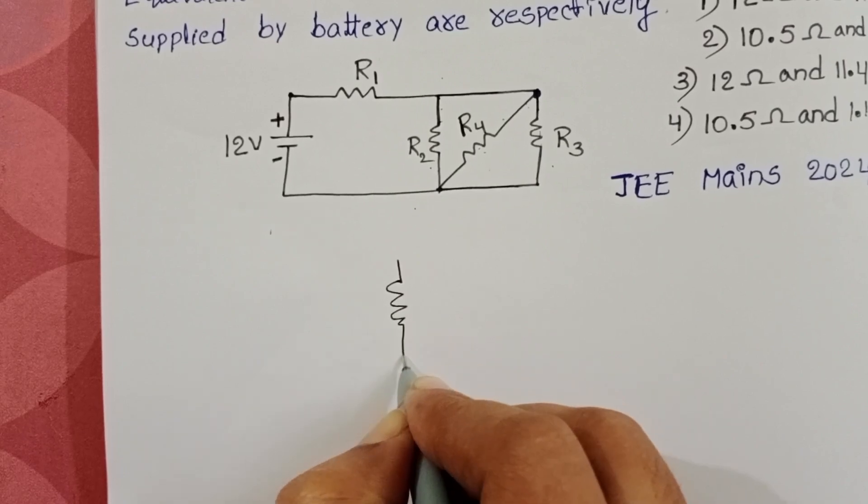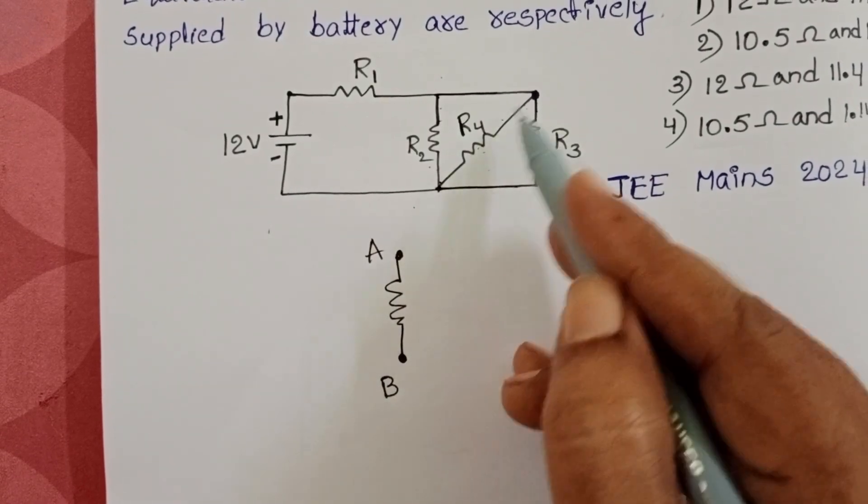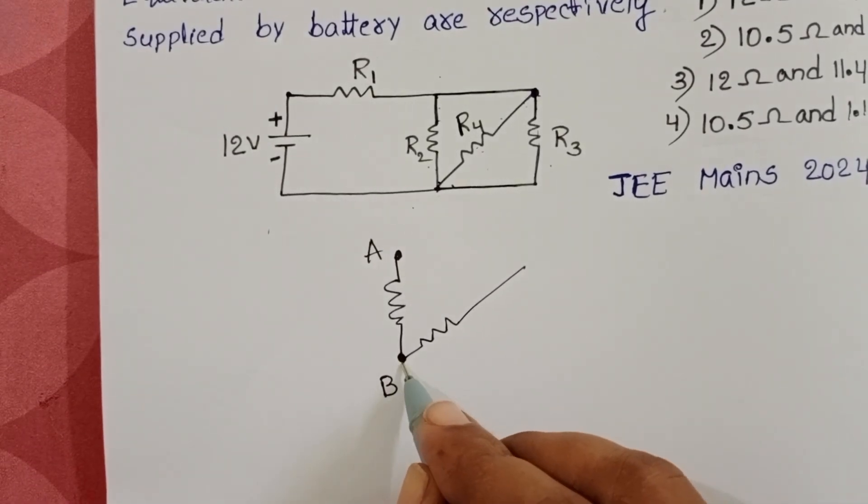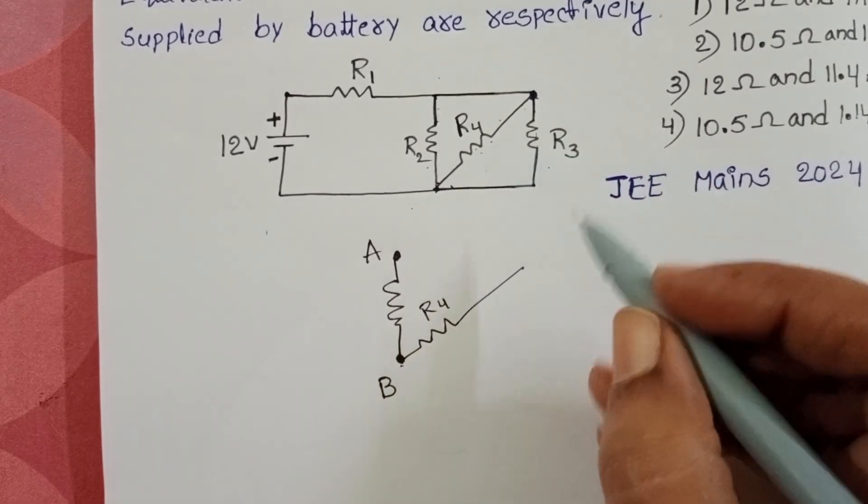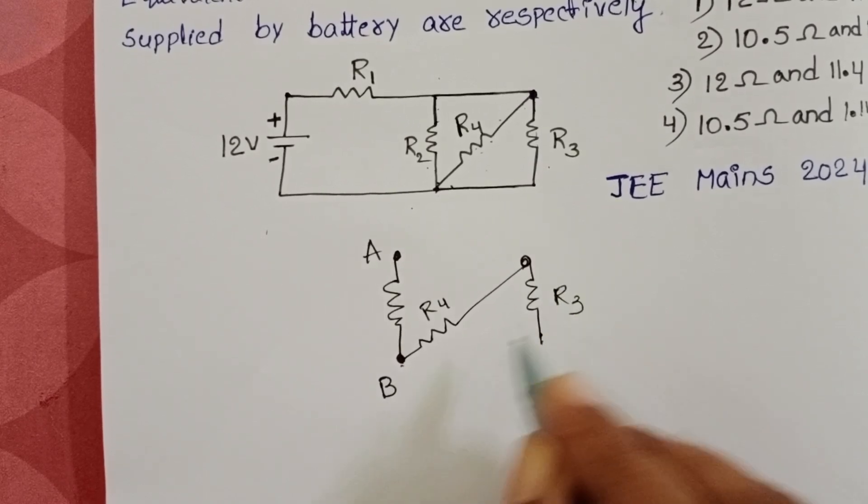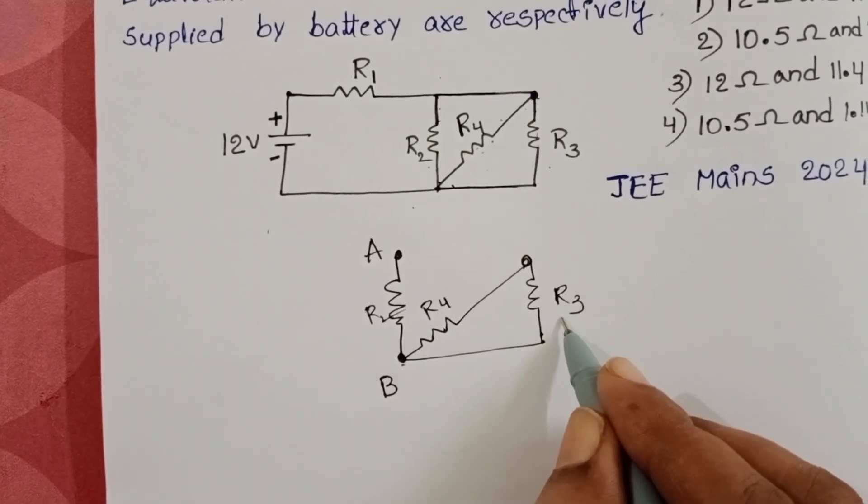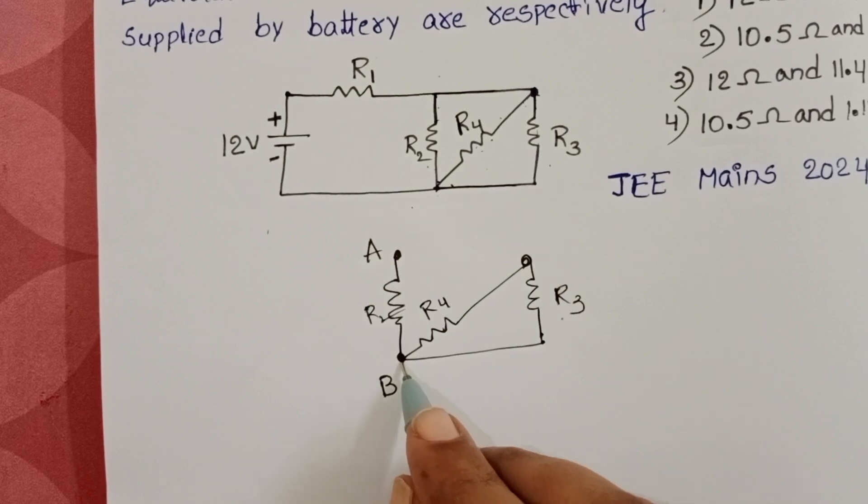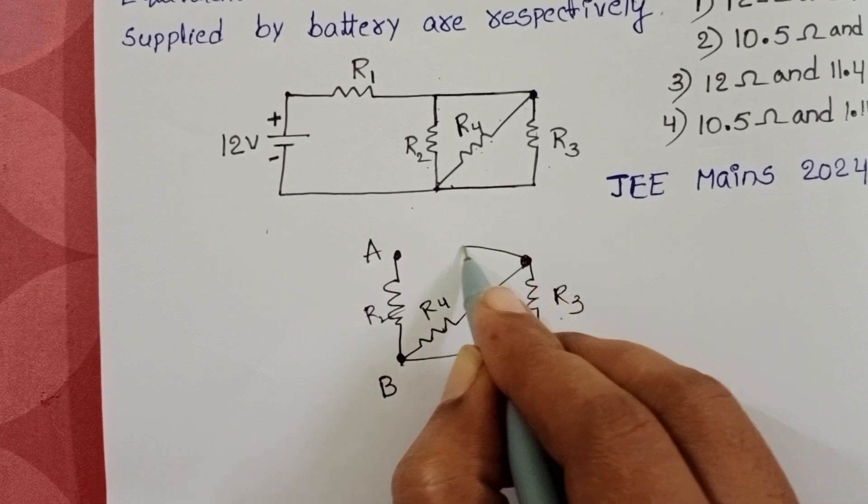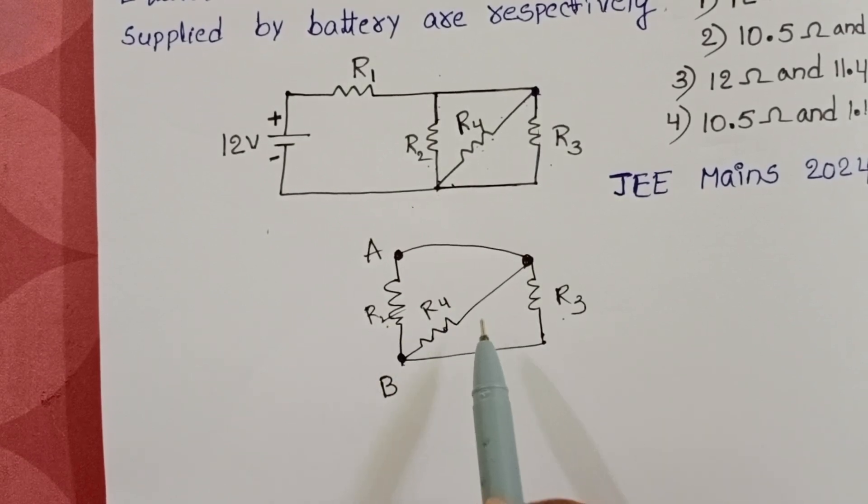Take R2 resistor. Name these two points A and B. R4 - one end is connected to B terminal, but the second end of R4 is connected to R3. Another end of R3 is connected to B terminal. So R4, R2, and R3 - one end is connected to B terminal, and with another wire, this terminal is connected to A. That means R2, R3, and R4 - these three resistors are connected in parallel.